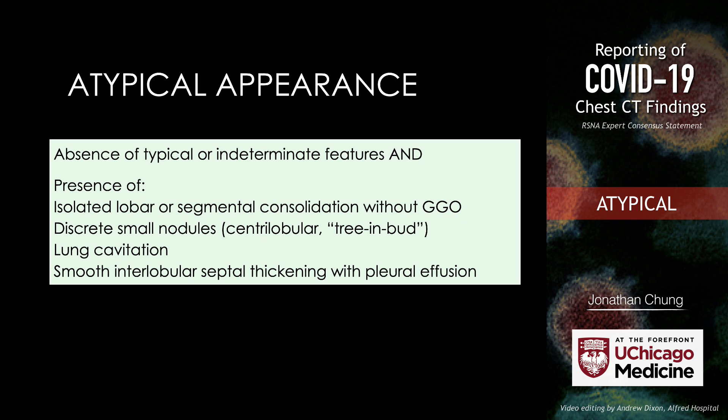The next category is the atypical imaging appearance. These are patients who have no findings of typical or indeterminate imaging features, and have other imaging findings suggestive of something other than COVID-19. We're not saying these patients can't have COVID-19, because every once in a while someone will present with an atypical imaging appearance. But if you see any of these things, you should really be thinking about an alternative diagnosis before COVID-19.